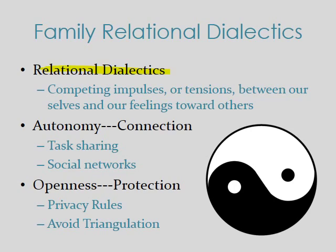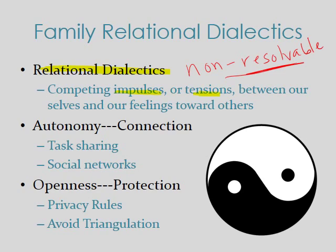A relational dialectic is a tension between ourselves and our feelings toward others—they can also be within ourselves. They are impulses or tensions, and importantly, they are non-resolvable. A lot of people think they'll be able to resolve these tensions, but they're kind of permanent. They remind us to keep our priorities straight. So you're not trying to solve the dialectic; you're learning to exist within it.